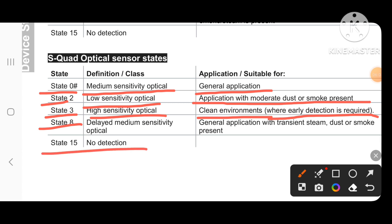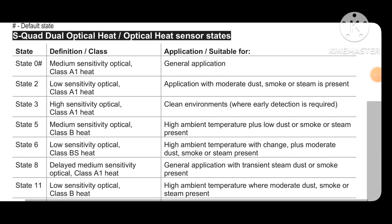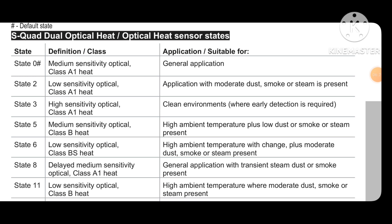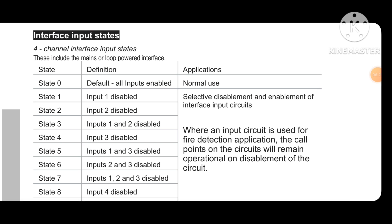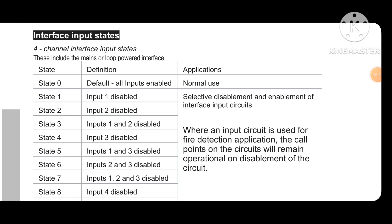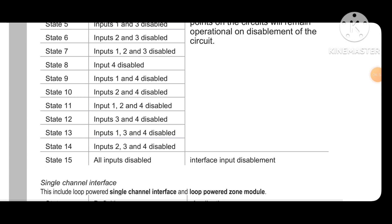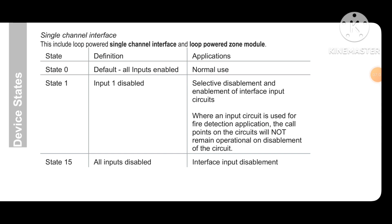If you put state 15 for any device, it means the device is not working. For a four-channel interface input: state 0 is default — all inputs enabled. State 15 means all inputs disabled. We have to set our states according to our need.